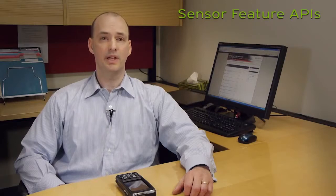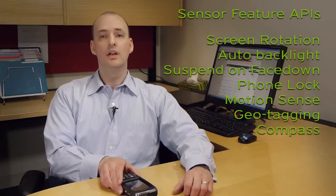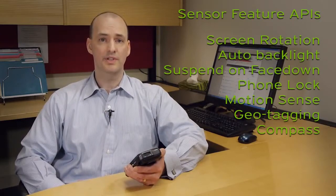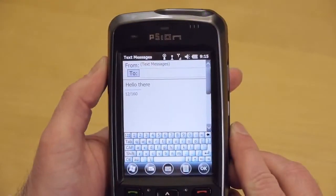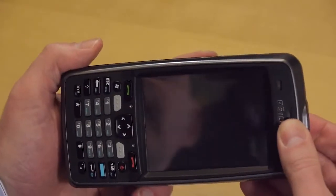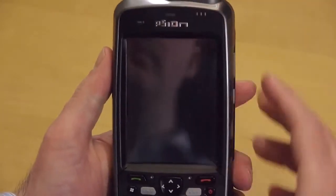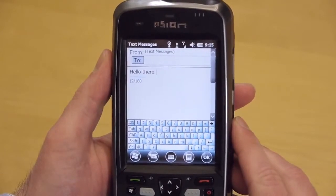With these new APIs available on the EP10, we've been able to implement some useful new features. For example, using the accelerometer, we're able to give you auto screen rotation. This feature is adjustable either through the control panel or via API calls in the SDK.